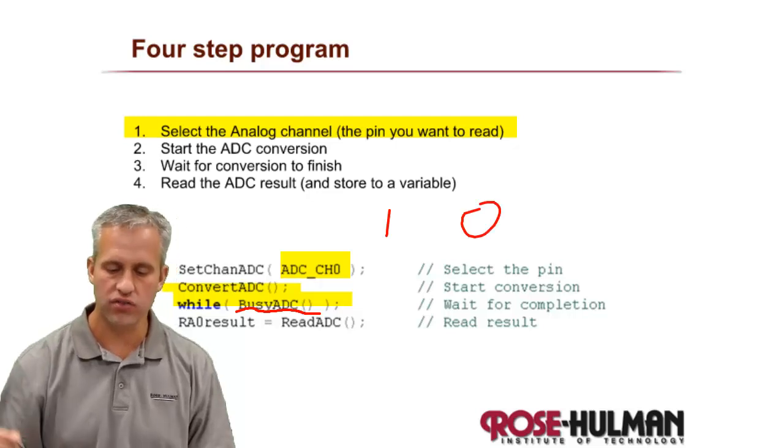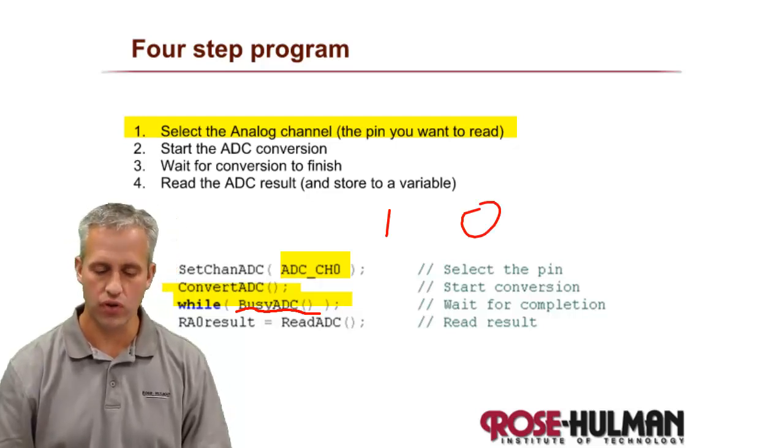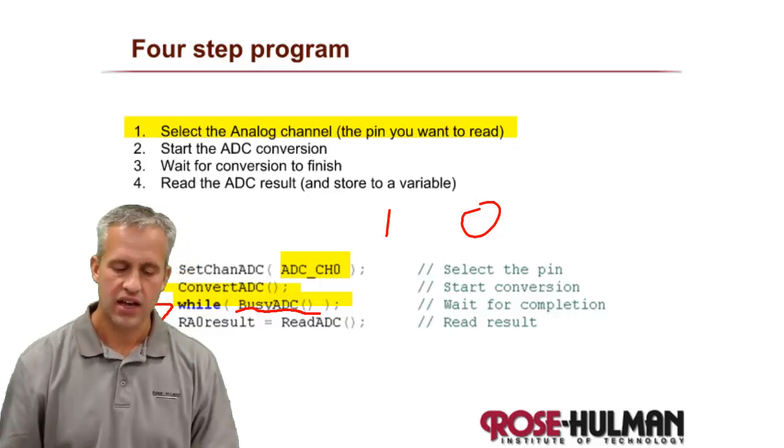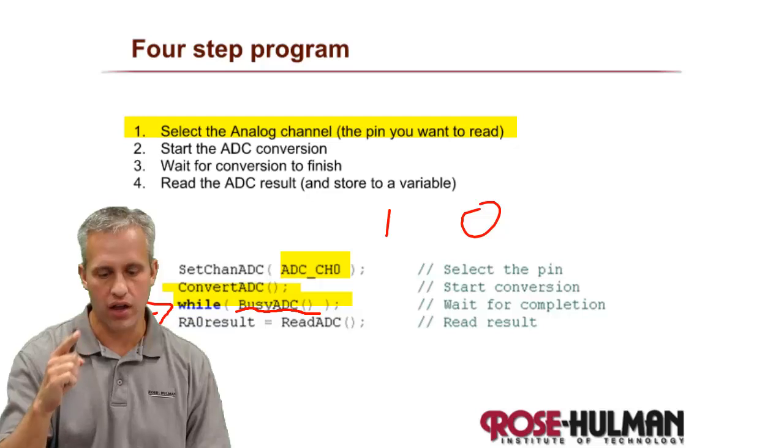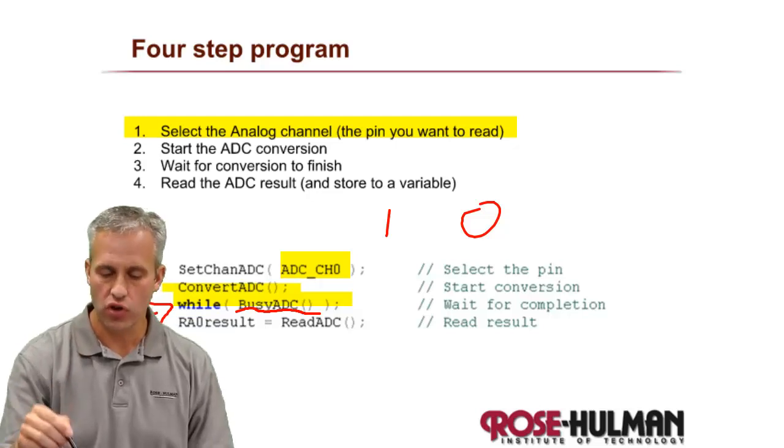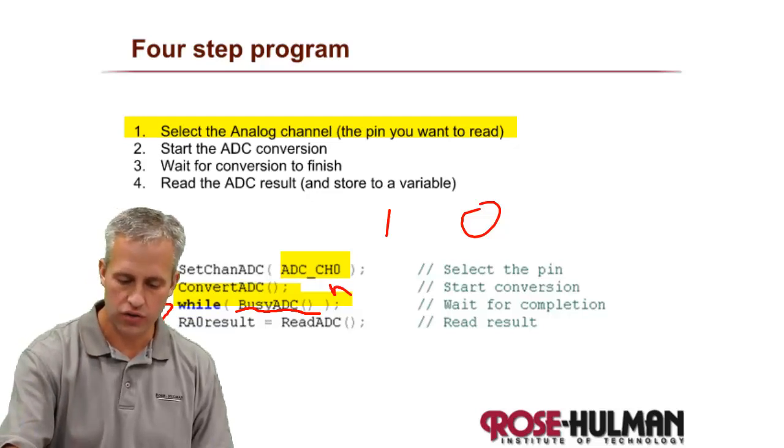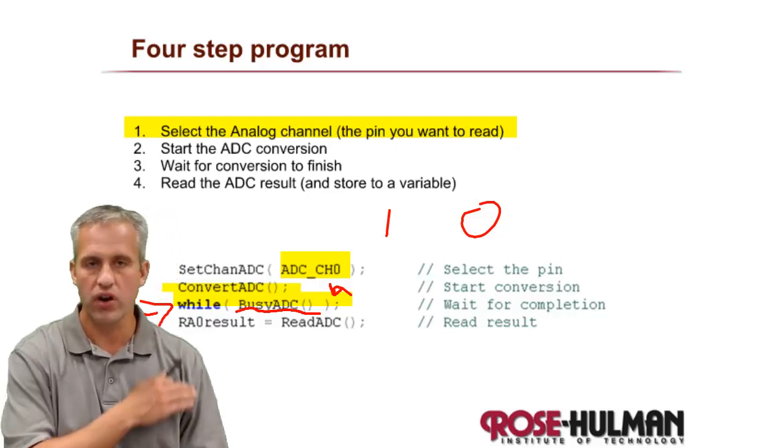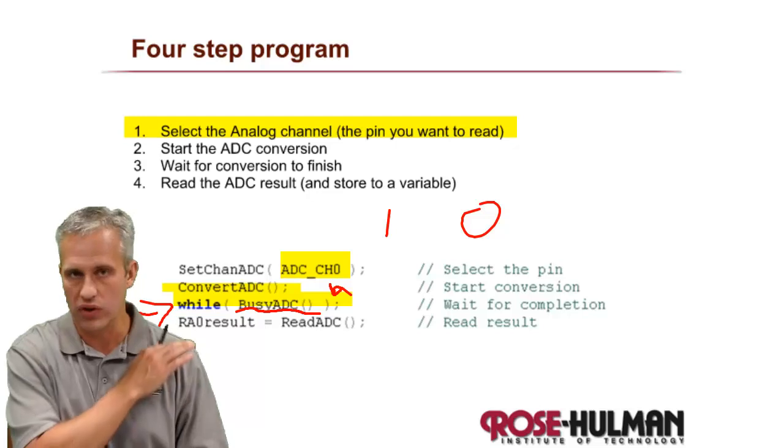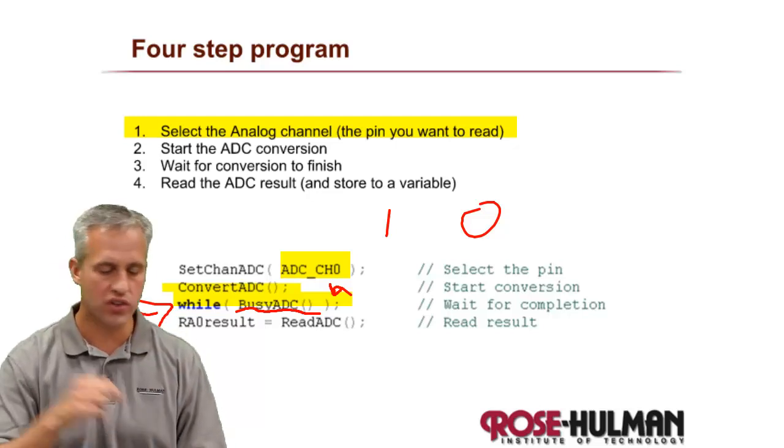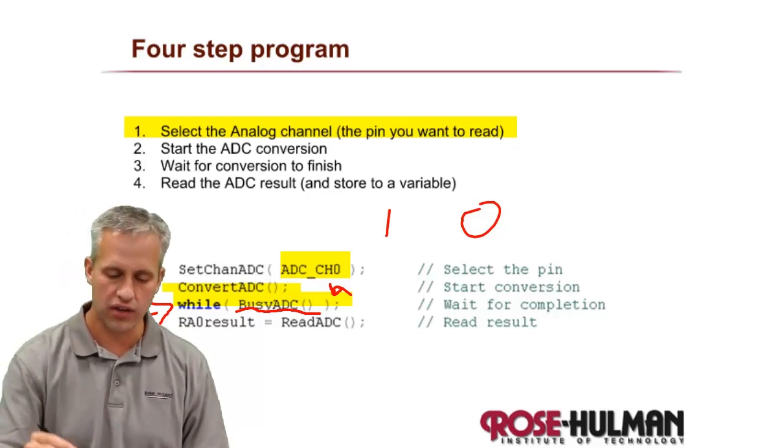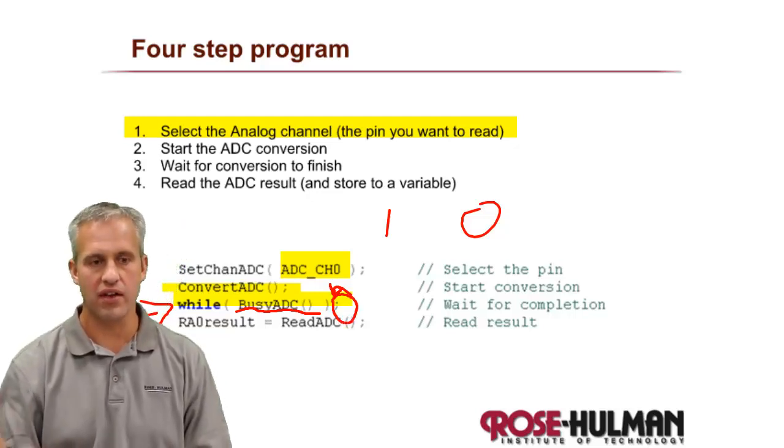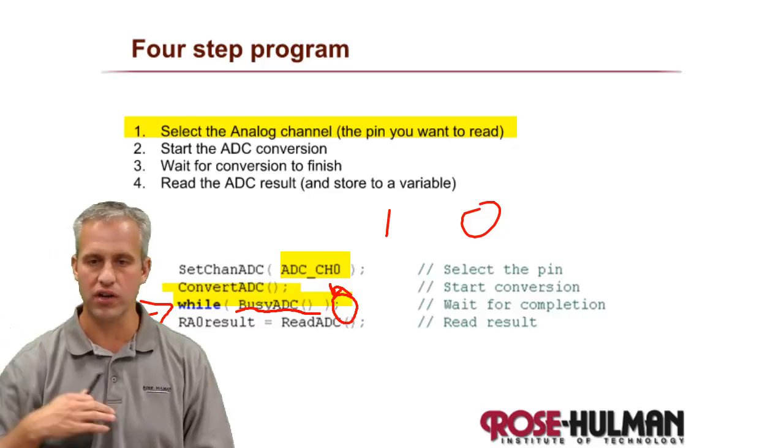Busy ADC is a function you can call, and while it's doing the conversion it will return one. As soon as it's done it will return zero. What we've got here is sneaky: it's a while loop on only one line. You could have used the opening curly braces and closing curly braces, but we want to do nothing. We want to do nothing while we're waiting. If you want to do nothing you can just put a semicolon, and that's kind of like an opening closing curly brace.